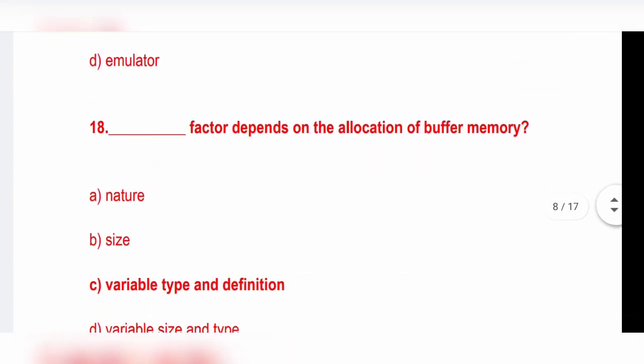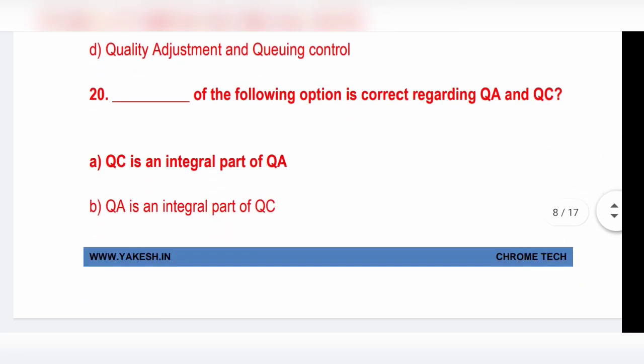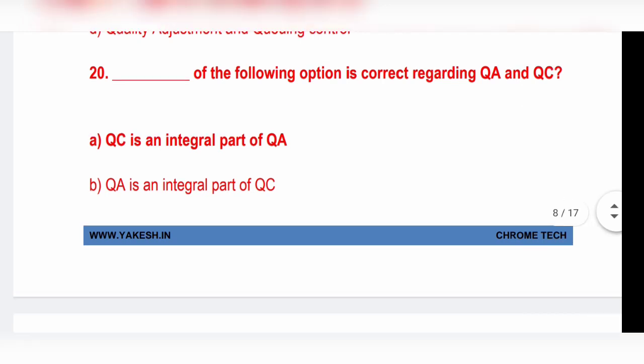Next question: Pattern depends on the allocation of buffer memory. Option C, variable type and definition is the correct answer. QA and QC stands for quality assurance and quality control. Option C, quality assurance and quality control. Which of the following option is correct regarding QA and QC? Option A, QC is integral part of QA, is the correct answer.